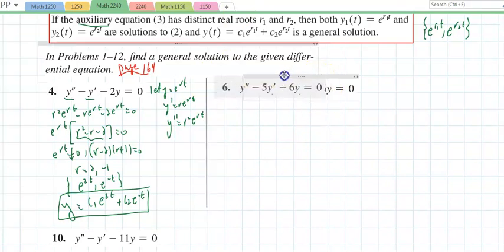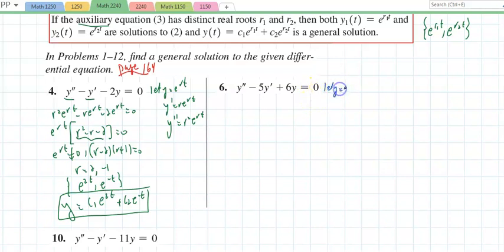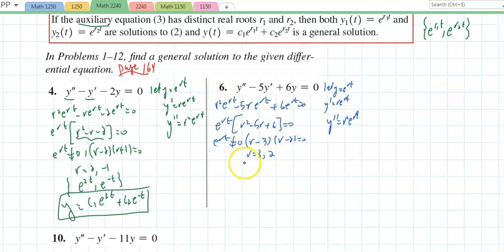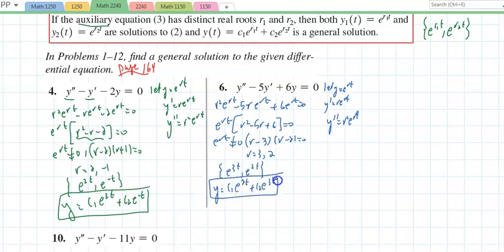Problem 6: same idea — second-order linear ODE with constant coefficients. Let y = e^(rt), so y' = r e^(rt) and y'' = r² e^(rt). Substituting gives r² e^(rt) − 5r e^(rt) + 6 e^(rt) = 0. Factoring out e^(rt): r² − 5r + 6 = 0, which factors as (r−3)(r−2) = 0, giving r = 3 and r = 2. The general solution is y = C1 e^(2t) + C2 e^(3t).